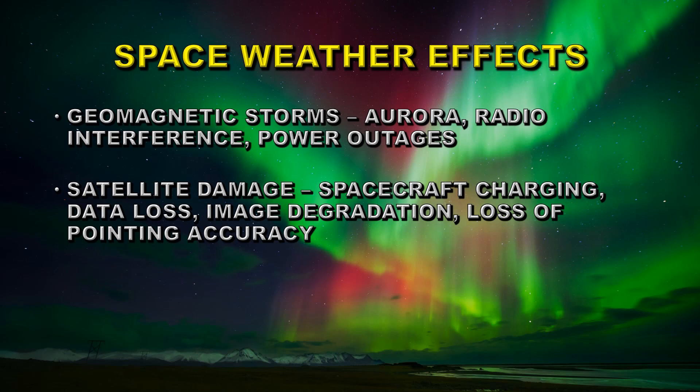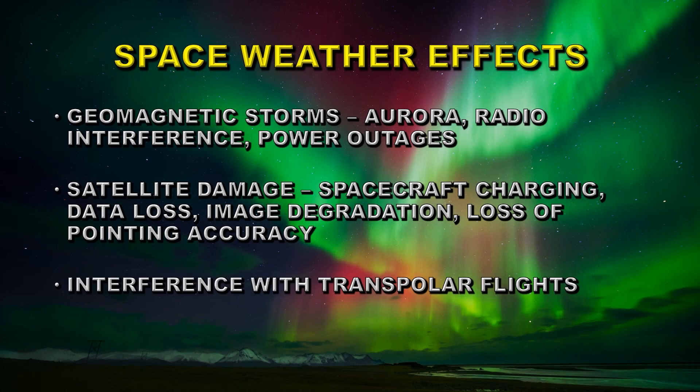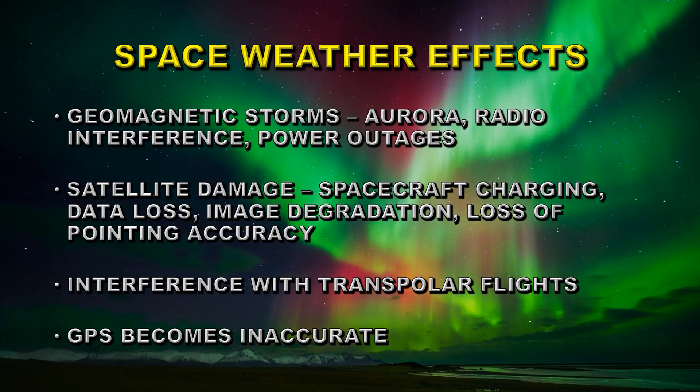Image degradation also occurs — particles hitting the focal plane of a detector produce a snow effect, so you don't get such good images. In extreme events, when the magnetosphere is compressed, satellites depending on magnetic pointing can actually lose their pointing accuracy. Extreme events at high latitudes can cancel transpolar flights, say from New York to Beijing, and have them rerouted through more southerly routes like Alaska, which costs the airlines a great deal of money.